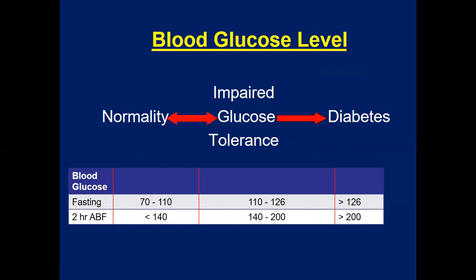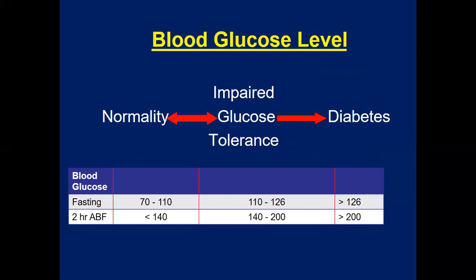There are three categories: normality, impaired glucose tolerance, and diabetes mellitus. In normality, fasting blood glucose should be 70 to 100 mg/dL, and two hours after a glucose load should be less than 140 mg/dL. If fasting glucose is between 100 and 126, the patient is not labeled diabetic but is considered pre-diabetic or having impaired fasting glucose.